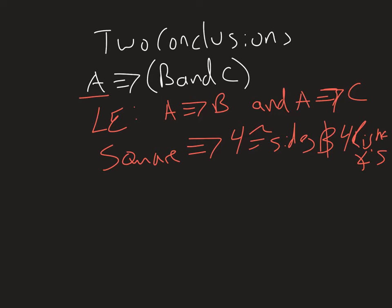And if we think about that, well a square implies it has four congruent sides and a square implies it has four right angles, so I can rewrite it and it still means the same thing.